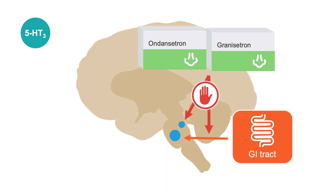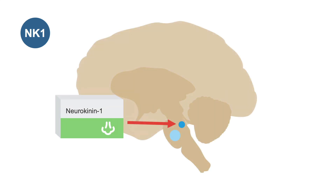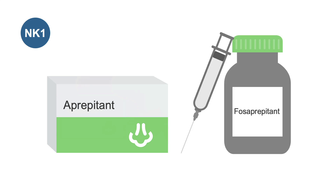A newer class of medications are the neurokinin-1 or NK1 antagonists. These act via blocking the NK1 pathway from the chemoreceptor trigger zone, and for this reason are primarily used for chemotherapy-induced nausea and vomiting. There are only two medications in this class: aprepitant, which is the oral form, and fosaprepitant, which is the IV form.